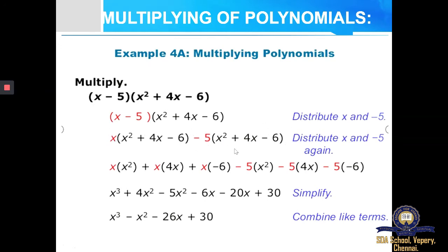Each and every term has to be multiplied with X of this polynomial. So X into X square, plus X into 4X, plus X into minus 6. Then minus 5 into X square, minus 5 into 4X. When you multiply X with X square, you are simply supposed to add the powers — X has power 1 (invisible but understood), so X power 1 plus 2 gives me power 3. Likewise 4X — power 1 plus 1 gives you power 2.